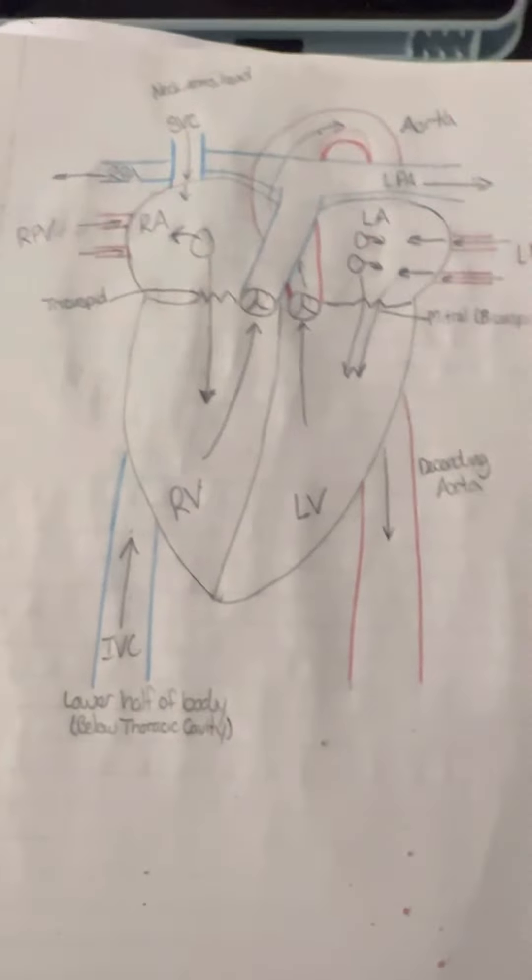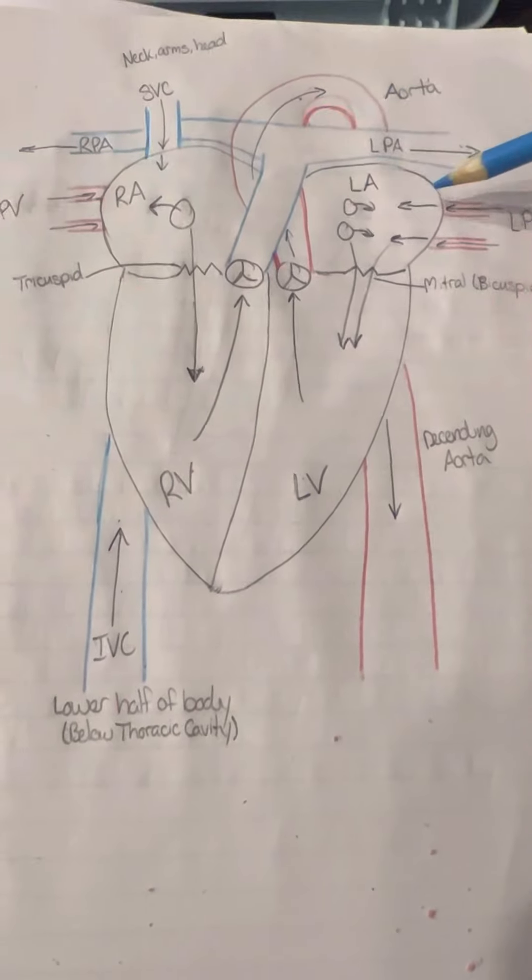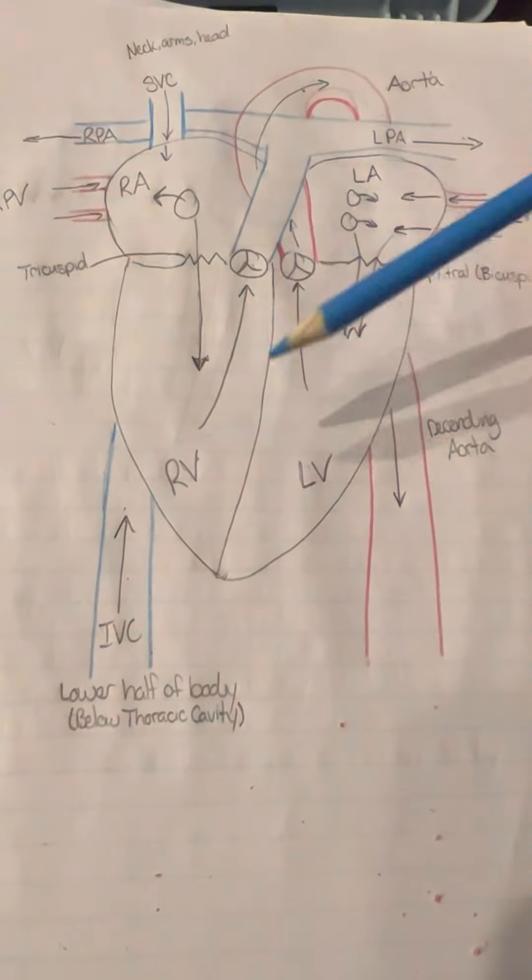Starting with the parts of the heart, it's divided into four chambers: right atrium, left atrium, right ventricle, and left ventricle.